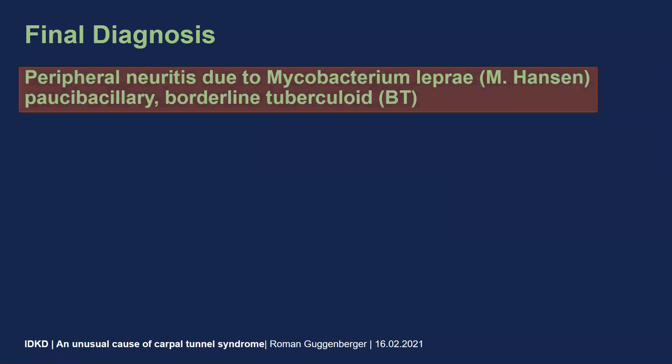Taking all these findings together, this is actually an interesting case of peripheral neuritis due to Mycobacterium leprae, or Morbus Hansen as it is called. We are dealing with a paucibacillary form and a borderline tuberculoid form in this patient. The diagnosis was of course confirmed by an ELISA test and by a mycobacteria PCR which was highly positive for Mycobacterium leprae.